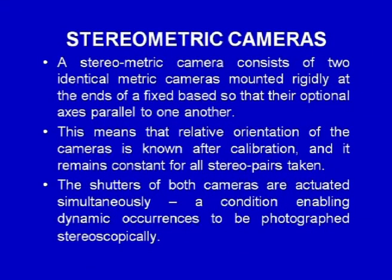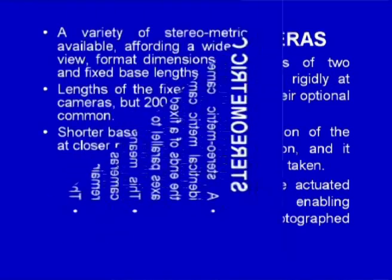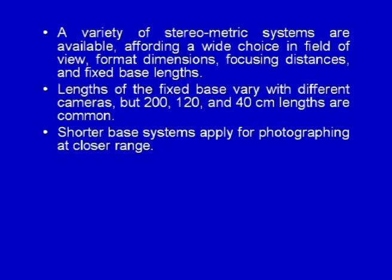A stereometric camera consists of two identical metric cameras mounted rigidly at the ends of a fixed base, so that their optical axes are parallel to one another. The relative orientation of the cameras is known after calibration and remains constant for all stereo pairs taken. The shutters of both cameras are actuated simultaneously, enabling dynamic occurrences to be photographed stereoscopically. A variety of stereometric cameras are available, affording a wide choice in field of view, format dimensions, focusing distance, and fixed base lengths.